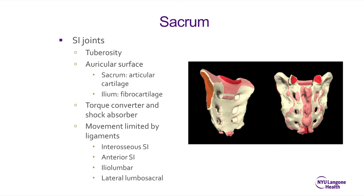The sacrum, seen from anterior and posterior views, is made up of the tuberosity and the auricular surface, which has articular cartilage on the sacral side and fibrocartilage on the ileal side. The SI joint serves as a torque converter and shock absorber during gait, and its movement is very limited — restricted by the anterior, posterior, and interosseous SI ligaments, the iliolumbar ligament, and the lateral lumbosacral ligaments.